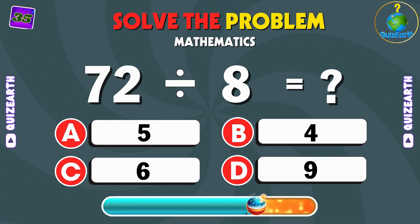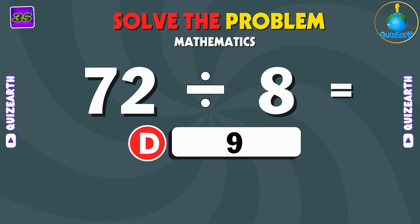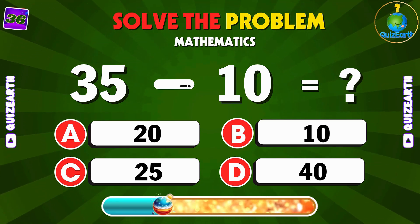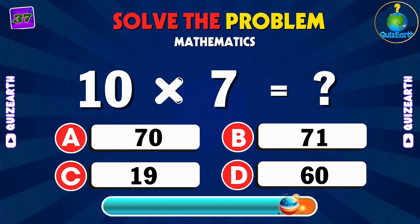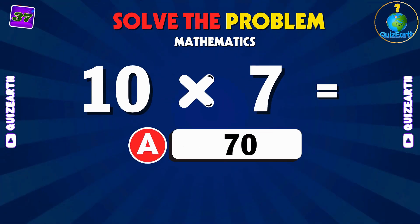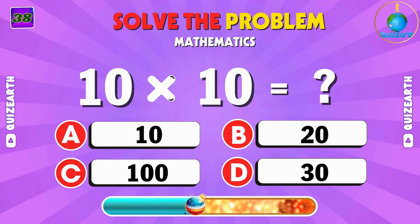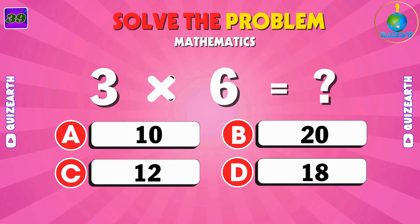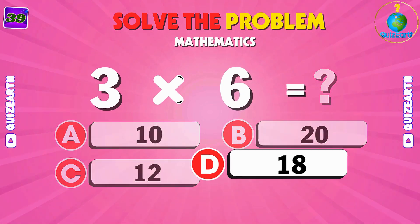What's 72 divided by 8? Answer: D. Subtract 10 from 30. C: 25. Multiply 10 by 7 — no calculators! A: 70. A big number. C: 100. Think fast and answer now. D: 18.